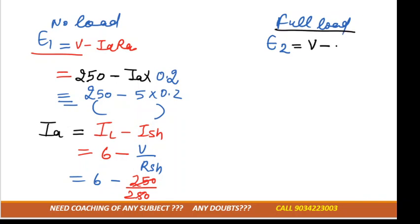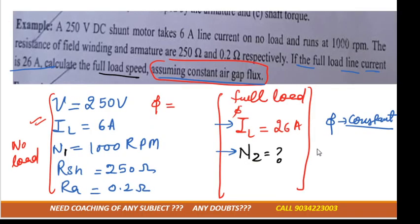Similarly we will calculate for full load, that is E2 = V - Ia×Ra. Voltage is same, 250. Ia again we need to calculate and armature resistance is again the same. But in this case Ia would be IL minus Ish. You can see in this question IL is different for the full load. Now IL is how much?